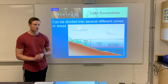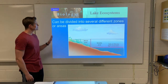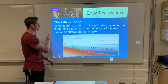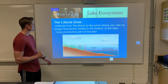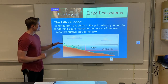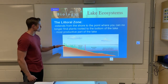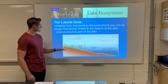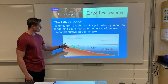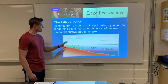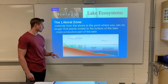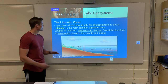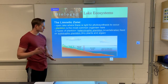For example, we can divide a lake ecosystem into three specific zones. The littoral zone extends from the shoreline to the point where you will no longer find rooted plants. This is the most productive area of the lake, mainly because there's good soil, a good amount of sunlight, and good nutrients. Then we move further out to the limnetic zone, where photosynthesis would still occur.